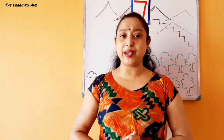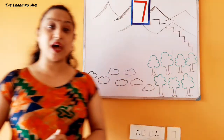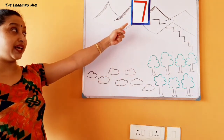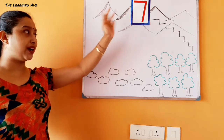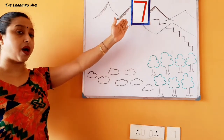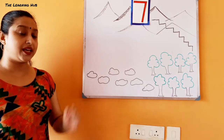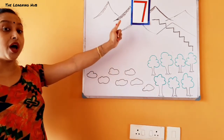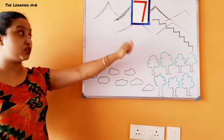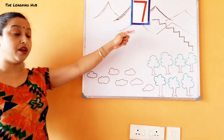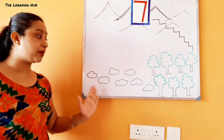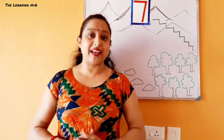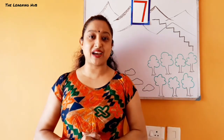Children, do you know how the number seven looks like? Yes, number seven looks like this! But now we can't touch and take this number seven because it is far away on the top of the mountain. So to get this number seven, we have to cross all the parts of the Land of Seven. So let's start our mission!